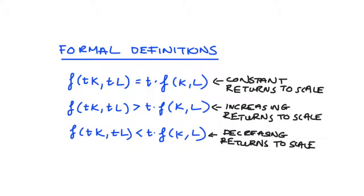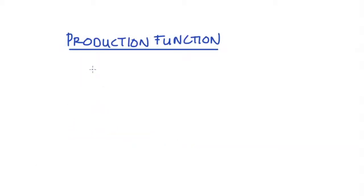So let's start then. Returns to scale is a property attributed to a firm's production function, which relates the inputs to production that the firm uses to the quantity that the firm produces, and we're going to call that Q for quantity. So we can be a little more formal here. Let's say that there are only two inputs to production, capital and labour, so that the quantity produced by the firm Q is some function of the level of capital K and the level of labour L.